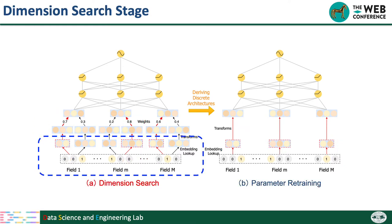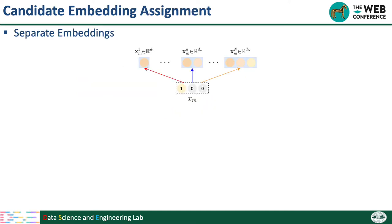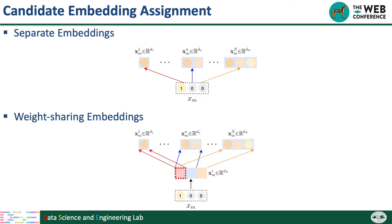For the dimension search stage, the first question is how to assign a set of candidate embeddings to each feature field. We propose two methods. The first is separate embeddings, where we directly assign multiple candidate embeddings with different dimensions for a given feature, and they are separate from each other. But this approach has two challenges: it needs huge space to store all candidate embeddings, and training efficiency is degraded since we need to learn many parameters.